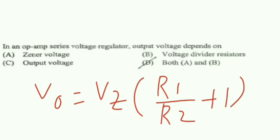From here we see Vo depends on Vz, that is zener voltage, and r1 and r2 are biasing resistors. So option A is zener voltage, option B is voltage divider resistor, so option D is both A and B. Option D is the right answer because it depends on both zener voltage and the voltage divider resistors.